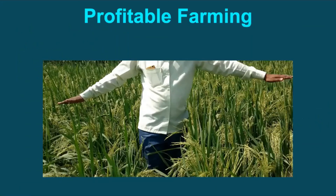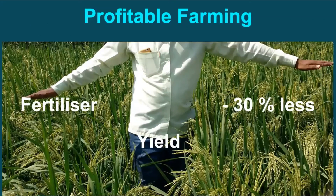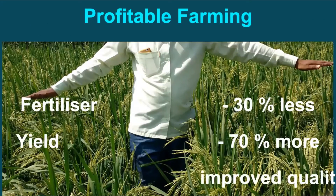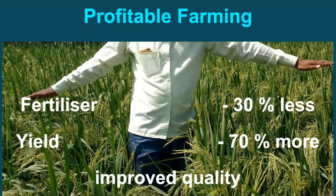In totality, use of humic and fulvic acid improves nutrient use efficiency, thereby increasing crop yield by up to 70%. It also improves the quality of the end product and brings down fertilizer use by up to 30%.